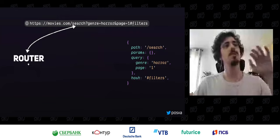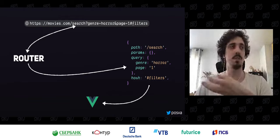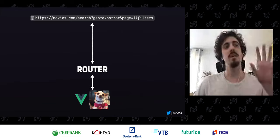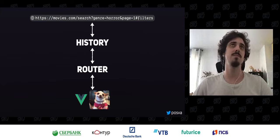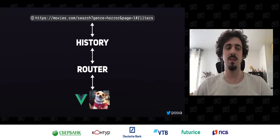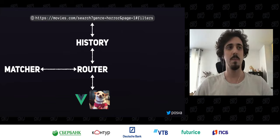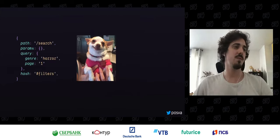There is still a lot happening. When we go from the URL to this object and get that to the user, we go through the router. The router communicates to the URL. In between, the first thing we notice is a history module that controls the URL. We also have something called the matcher, which plays a very important role in routing — it's a big part of dynamic routing. Then we have the components: router-view and router-link.